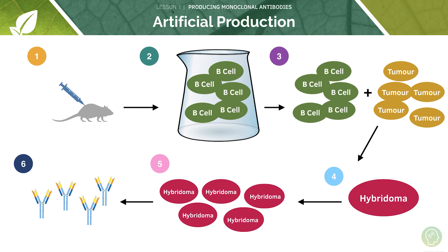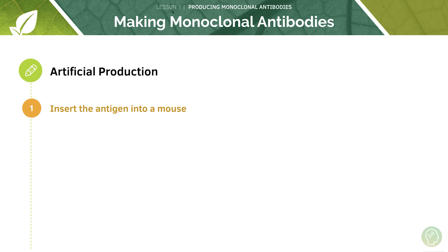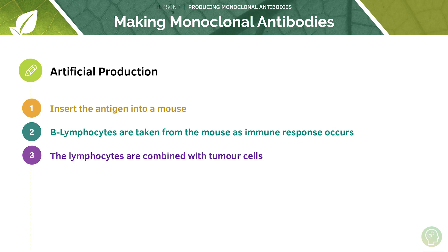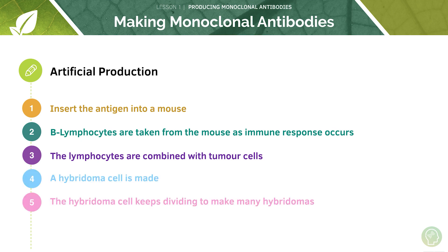To recap all of this in a clearer form: number one, we insert the antigen into a mouse. Number two, the B lymphocytes generated in the mouse's immune response are collected from the spleen. The lymphocytes are then combined with tumour cells - myeloma cells specifically. A hybridoma cell is made, and this hybridoma cell keeps dividing to make many hybridomas. So we get lots of monoclonal antibodies made, because they're all generated from one clone of B lymphocyte.